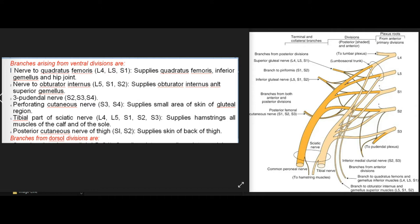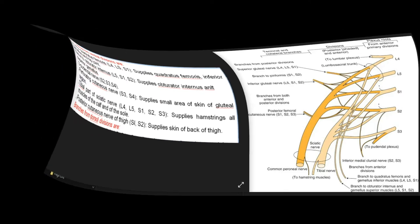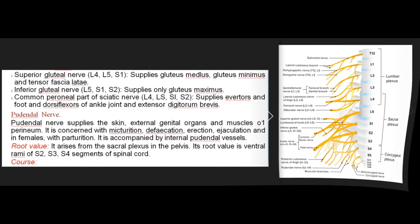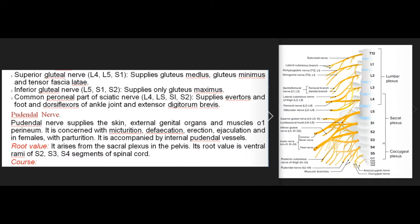From ventral divisions also: (5) tibial part of sciatic nerve (L4, L5, S1, S2, S3), supplying hamstrings, all muscles of the calf and of the sole; (6) posterior cutaneous nerve of thigh (S1, S2), supplying skin of the back of the thigh. Branches from dorsal divisions are: (1) superior gluteal nerve (L4, L5, S1), supplying gluteus medius, gluteus minimus, and tensor fasciae latae.